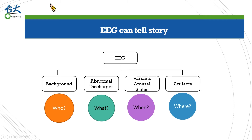Artifacts can also tell us a lot of information. I summarized four major domains of EEG in this slide. The background tells us who the subject is. The abnormal discharges — including epileptiform discharges or slow waves — tell us what is happening in the brain. The variants usually occur in association with the arousal status of the patient, that is, the timing of recording the EEG. Finally, the artifacts are able to tell us about the patient's environment. Only by combining all this information are we able to guess the true condition of the patient, even if we did not see them directly. That is what I mean by being a detective.